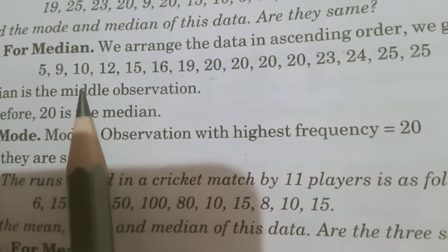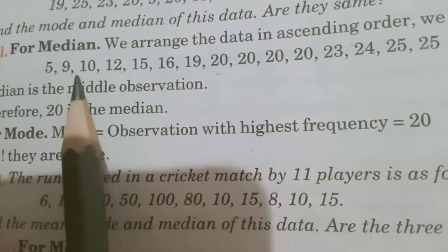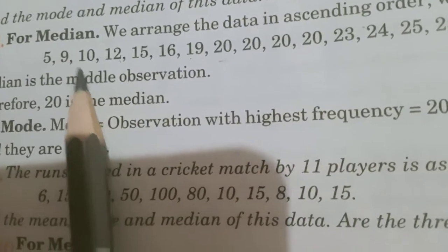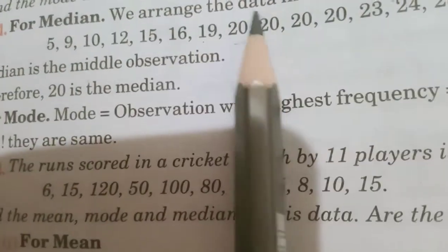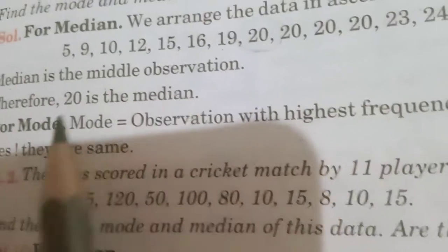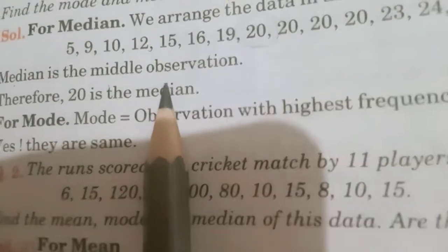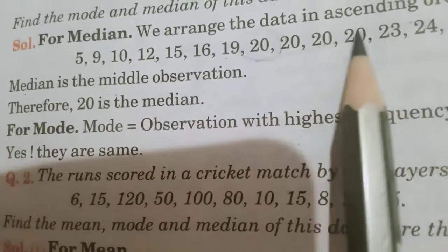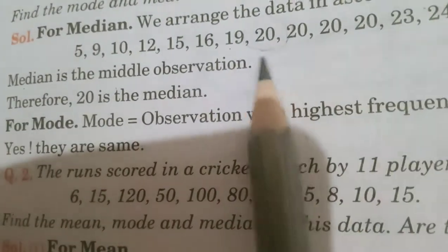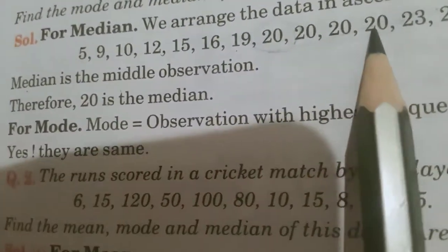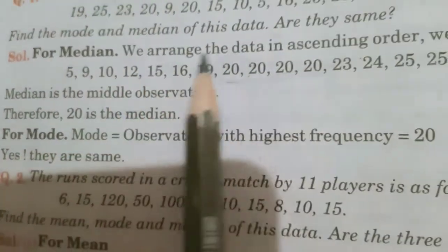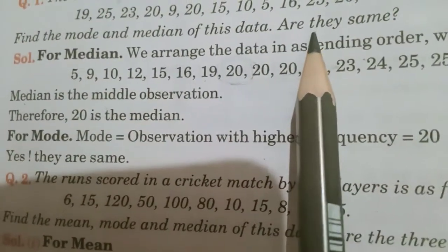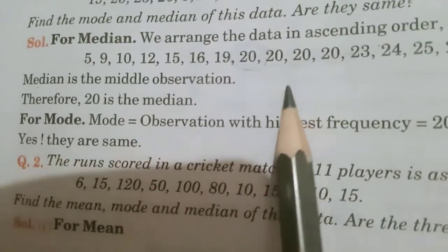Means, 8 plus 15 divided by 2 is 15 by 2. 15 upon 2. Means, what? 8th term. 1, 2, 3, 4, 5, 6, 7, 8. 8th term is 20. Then, 20 is the median. Is that okay? And see, 20 comes most time. Maximum time. Therefore, 20 is mode also. Then, what is our question? Are they same? Means, mode and median are same? Yes, both are same. Okay?